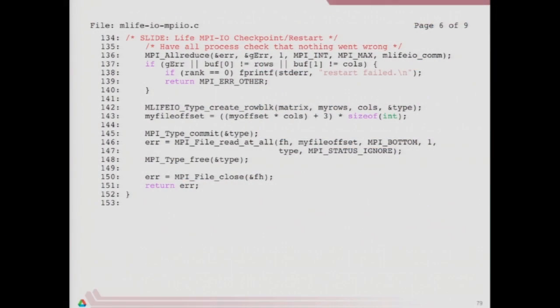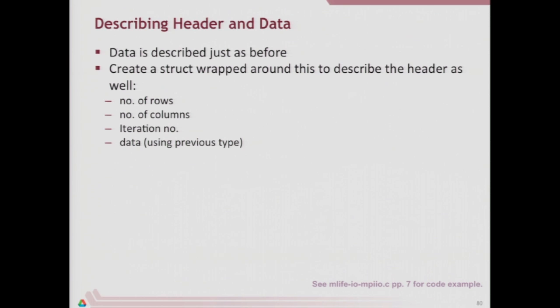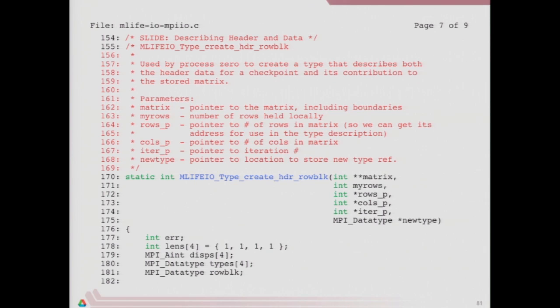This header row block version needs a few more variables to use the struct type we're going to use to describe everything. First, we use the old row block function to describe the collection of rows that rank zero is going to write.